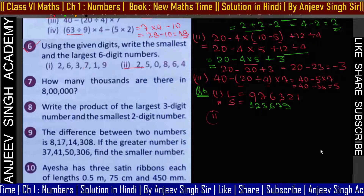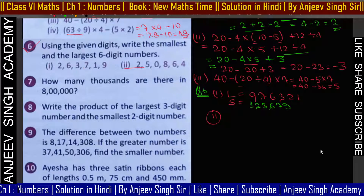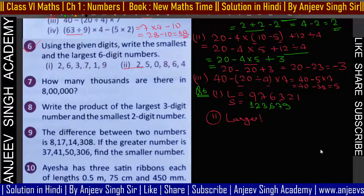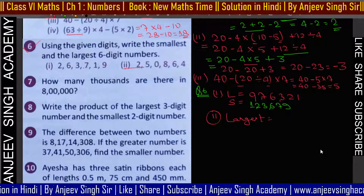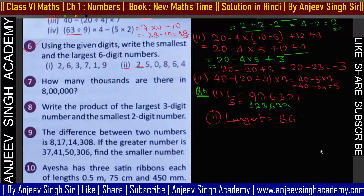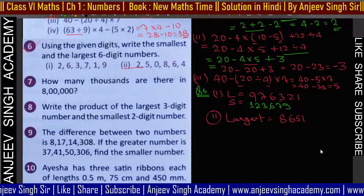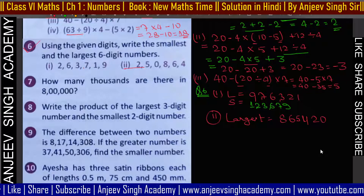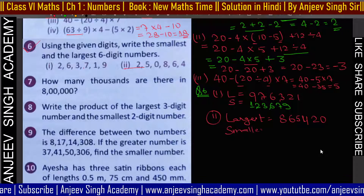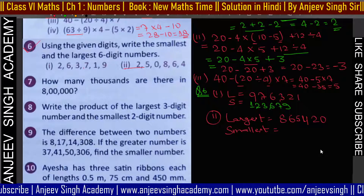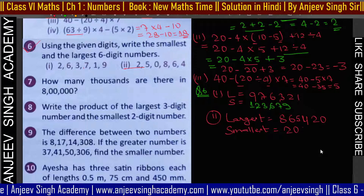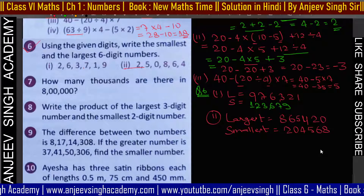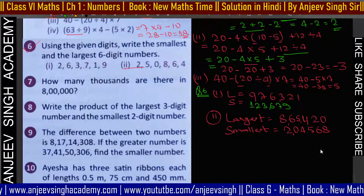Question number 2: largest value लिखनी है तो bigger value पहले — 8, 6, 5, 4, 2, 0। Smallest के लिए 0 से start नहीं कर सकते, तो 2 से start करना होगा: 2, 0, 4, 5, 6, 8। यह हमारा smallest number हो जाएगा।